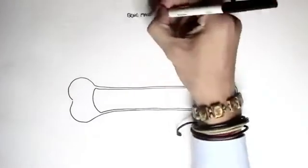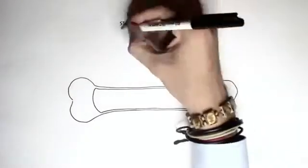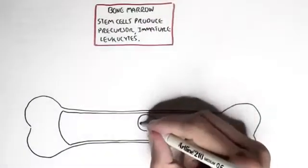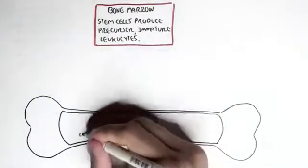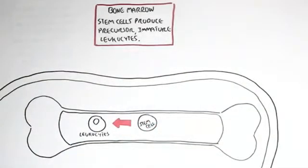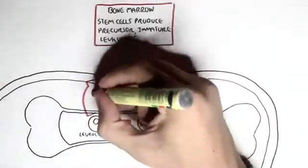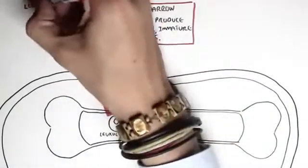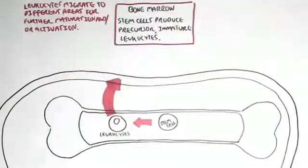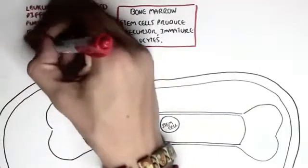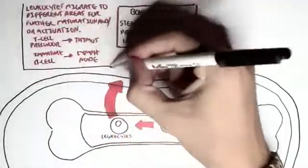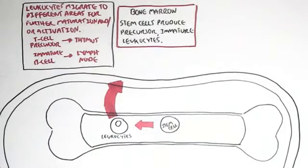Before looking at the main big map we're just going to draw a small map and look at the overview of what we're actually going to learn today. The bone marrow has what's called stem cells, and these stem cells produce precursor or immature leukocytes, the white blood cells. Once these white blood cells are in the bone marrow, they will leave into the bloodstream, and the leukocytes will migrate to different areas and different tissues for further maturation or activation. For example, the precursor T cell matures in the thymus, and the immature B cell goes to the lymph nodes to become activated.